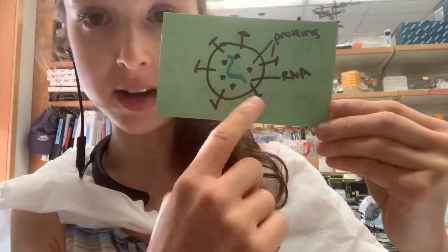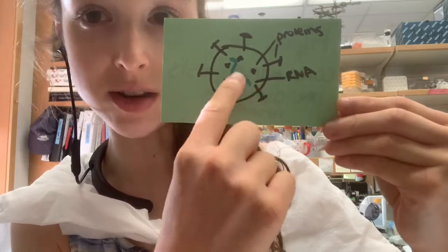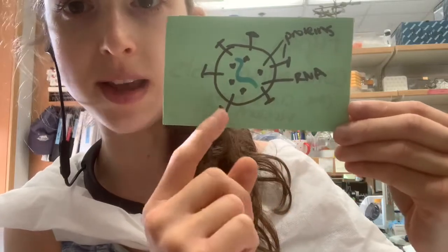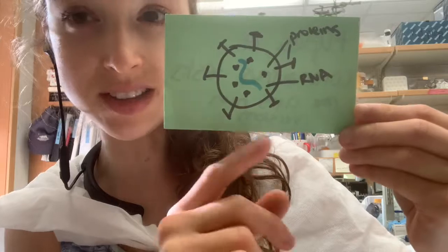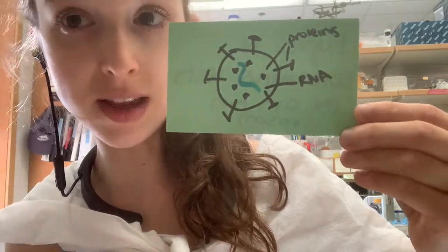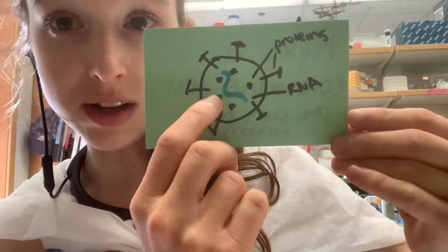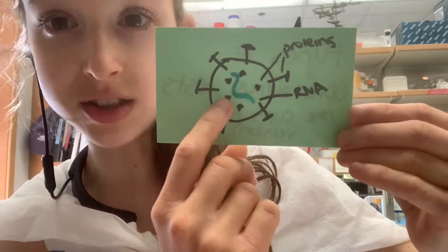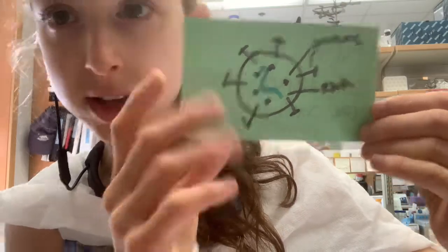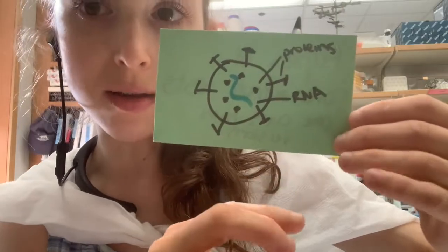Basically, the coronavirus is like this membrane-bound sack — an oily lipid membrane — and inside it has viral RNA. The virus has a single strand of RNA that has all the instructions for making more copies of the virus. It also has some proteins, and you hear about the spike protein that sticks out — that's the one that docks onto our cells and lets the virus in, and that antibodies can bind to prevent that from happening.